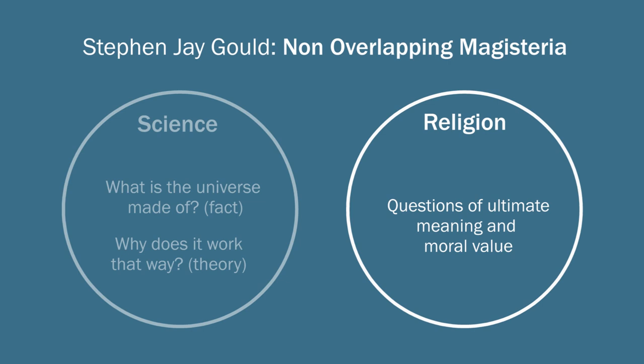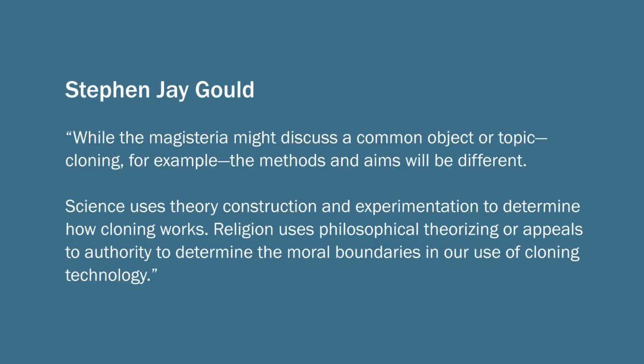So Gould says, to quote, while the magisteria might discuss a common object or topic, like cloning for example, the methods and aims will be different. Science uses theory construction and experimentation to determine how cloning does or might work. Religion uses philosophical theorizing or appeals to authority to determine the moral boundaries in our use of cloning technology.